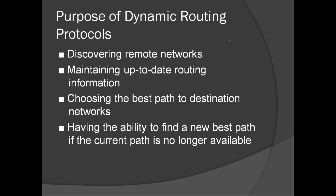Next is choosing the best path to the destination network — that is a core function of a router. It will select the best possible path going to the destination. Finally, it has the ability to find a new best path if the current path is no longer available. If the best path fails — for example, if a link goes down — it will automatically look for another best path on the network, as defined by the router configuration.